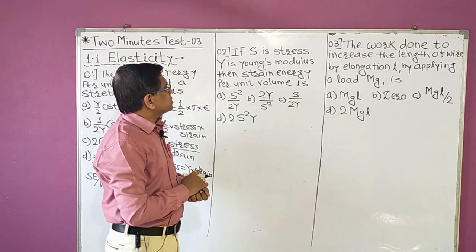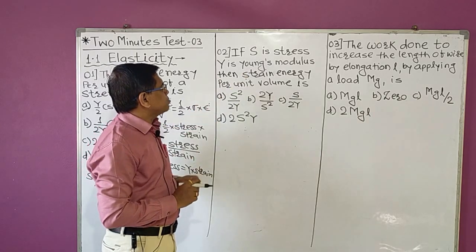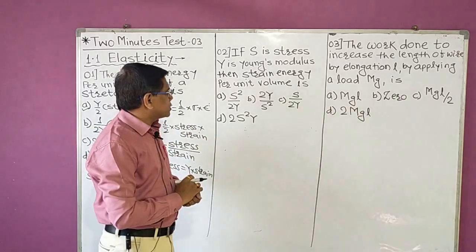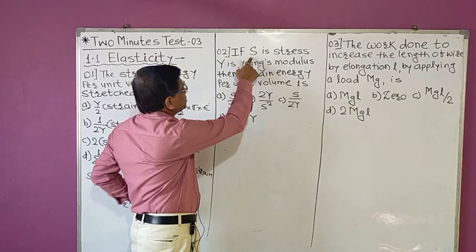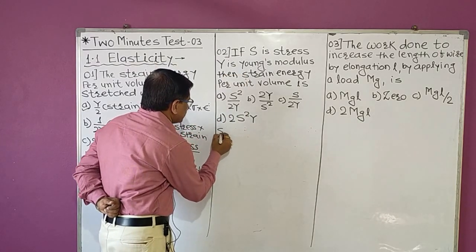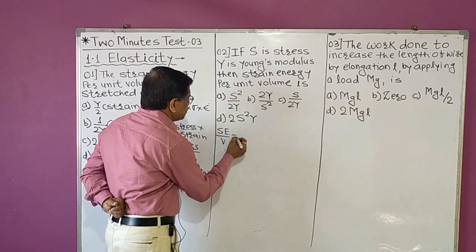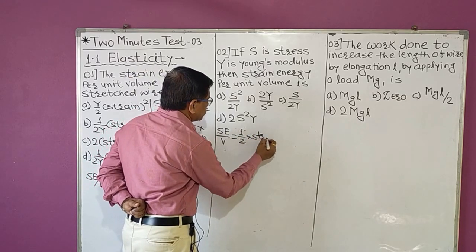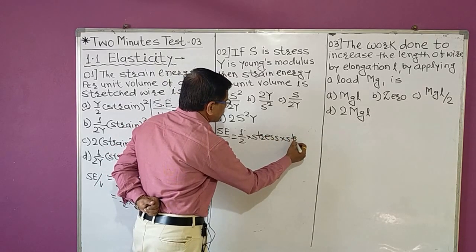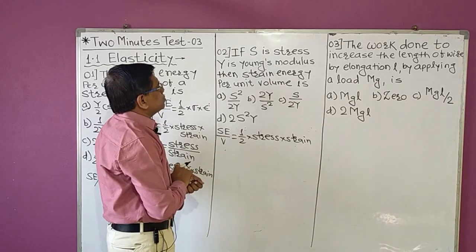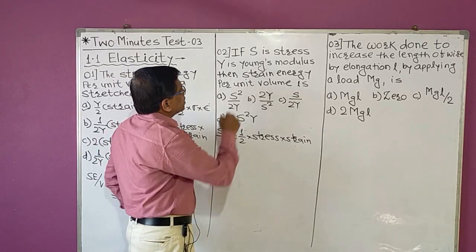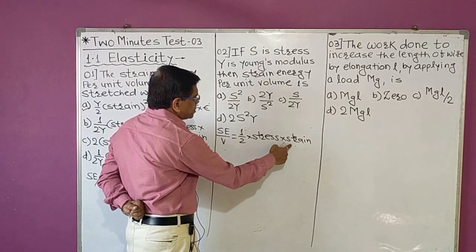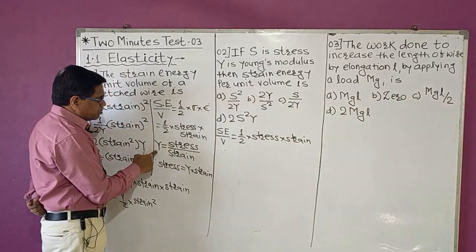The second MCQ: if S is stress and Y is Young's modulus, then strain energy per unit volume is — again based on the same formula. Strain energy per unit volume = (1/2) × stress × strain. Here stress is given as S and Young's modulus is given, but strain is not given directly, so we replace strain using the Young's modulus formula.